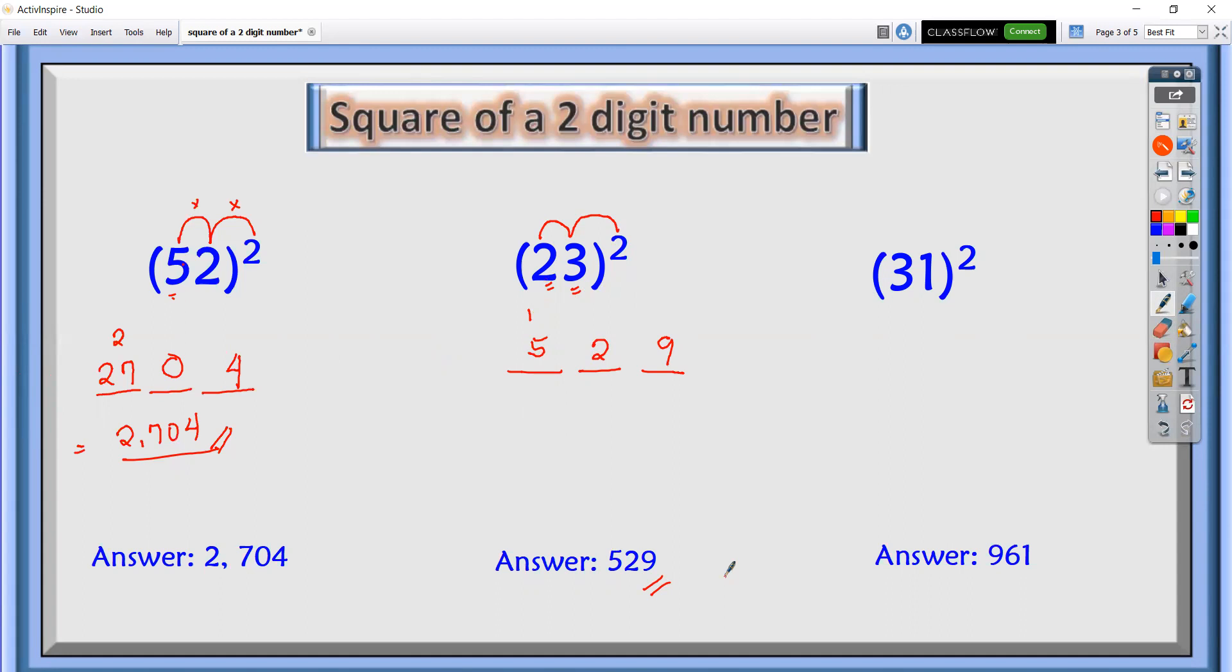And the last number, 31 quantity squared. We have square the last number, 1 squared is 1. Multiply 3 times 1 is 3, times 2, it's 6. So we will write the middle number, and then square the first number, 3 squared, we have 9. So we get an answer of 961.